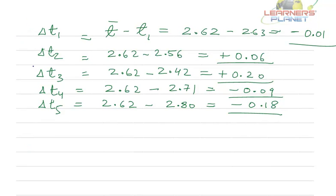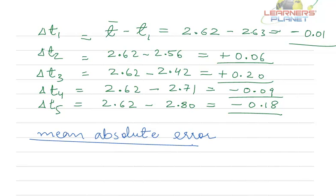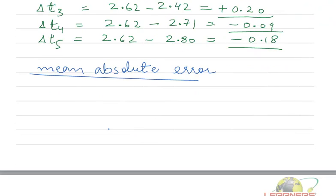Now two portions are complete. The third question is to find out the mean absolute errors. That means mean of the absolute errors. In the second part, we found out only the absolute errors. And these were for the individual readings. Now, mean absolute error.